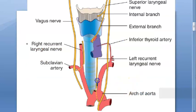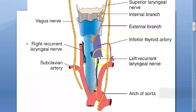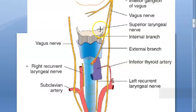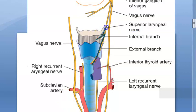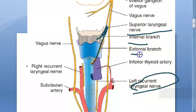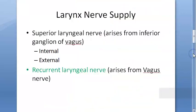Looking at the recurrent laryngeal nerve and larynx nerve supply: from the superior laryngeal nerve you have two branches — the internal and the external. So you have two nerves to remember: superior laryngeal nerve and recurrent laryngeal nerve. From the superior laryngeal nerve you can have two branches — internal and external. Let us look at what these actually supply.